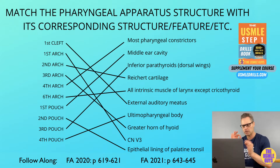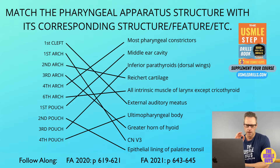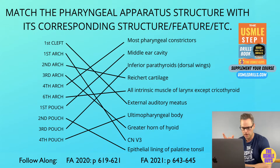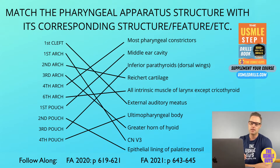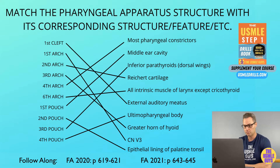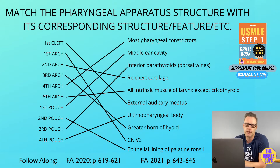Let me mention something super high yield here. They'll commonly ask about the third and fourth aspects of the pharyngeal pouches. The third gives rise to the inferior parathyroids, the fourth to the superior parathyroids. Make sure you can decipher between those two because it's a commonly asked question.